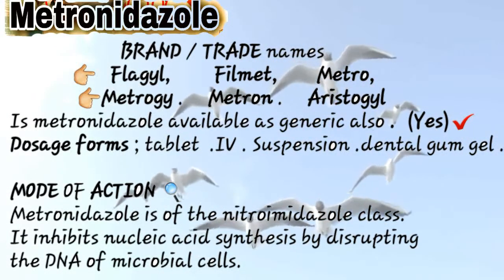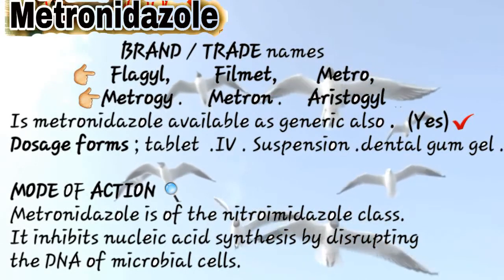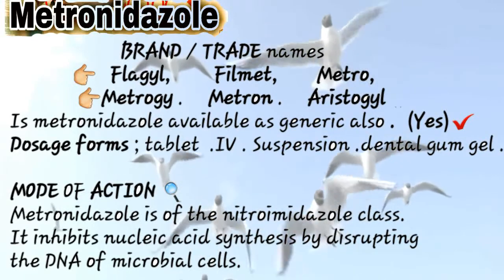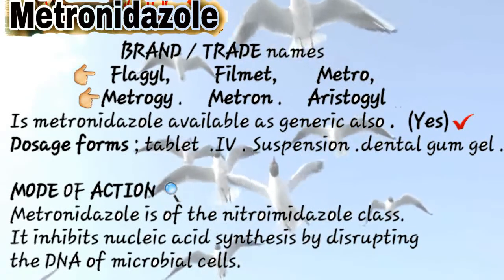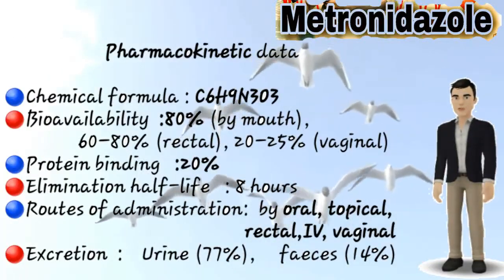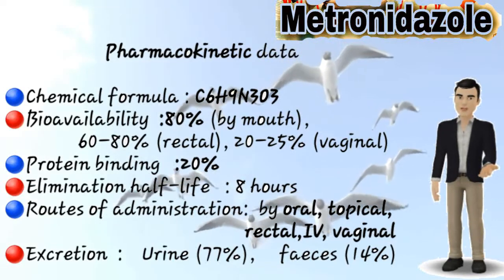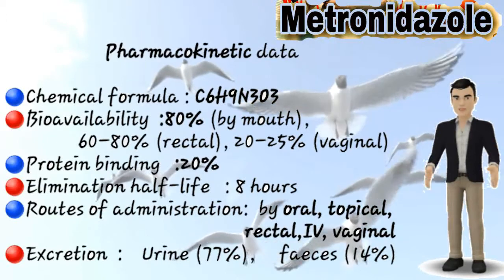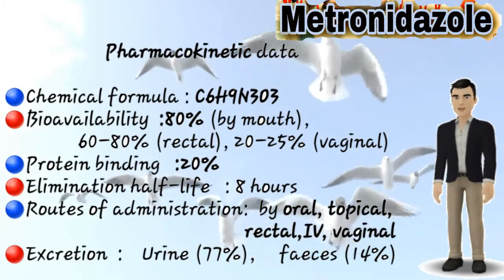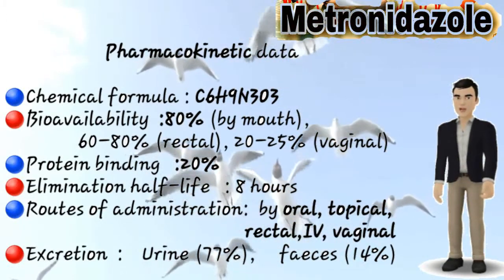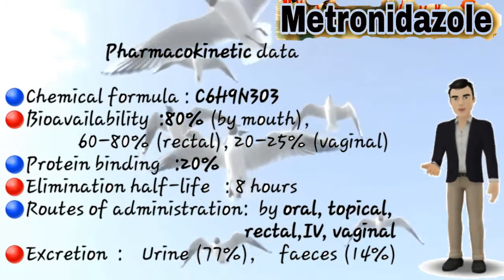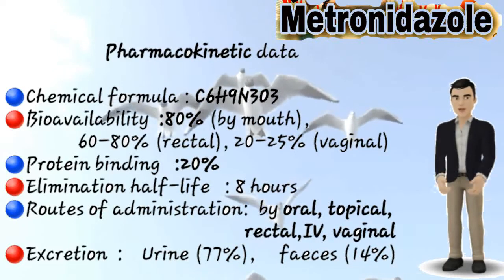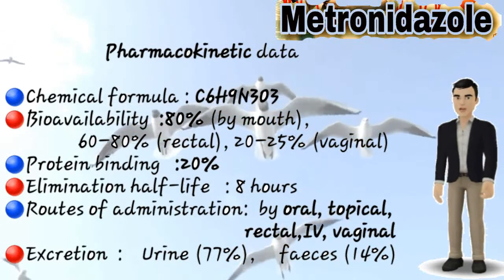Some brand names of metronidazole include Flagyl, Metrogel, Metron, Filmet, Metro, and Aristogel from Aristo. Regarding the chemical data: bioavailability is around 80%, protein binding is 20%, elimination half-life is 8 hours, onset of action is within a few hours after taking the dose, and duration of action is also 8 hours.